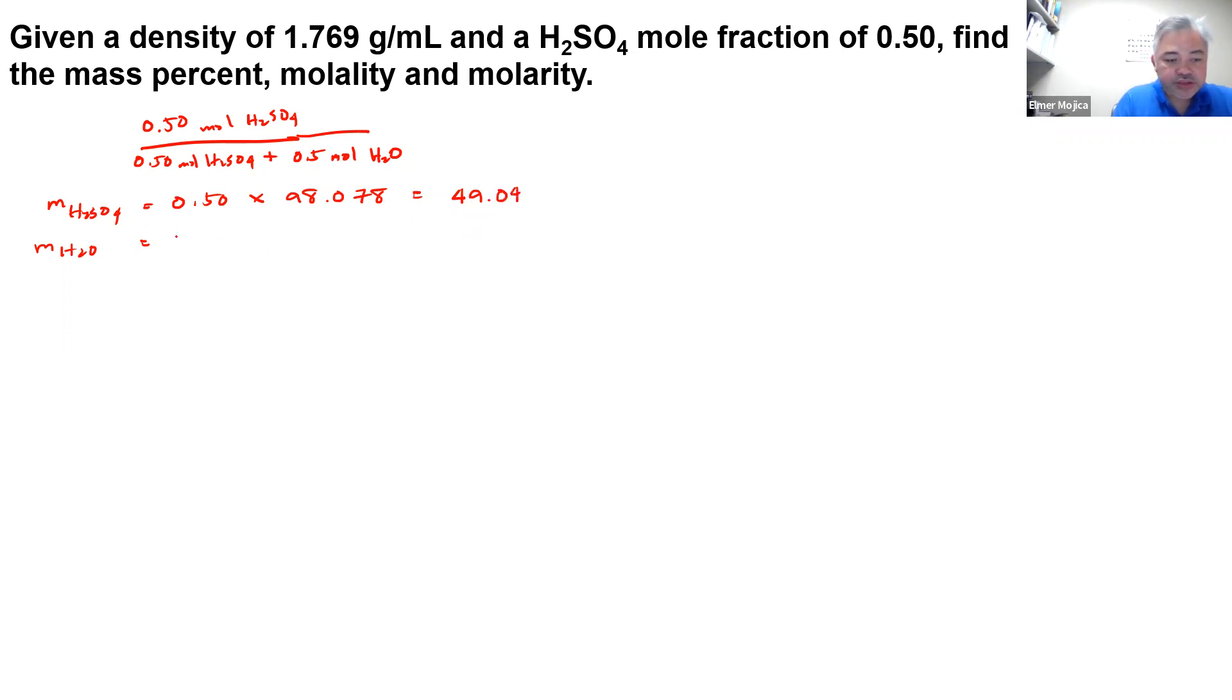And then here you will have 0.5 moles times 18.015 grams per mole. That's the molar mass of water. So if we're going to do it, this is grams, this is moles, moles, grams per mole. So you have here around 9.00 grams.